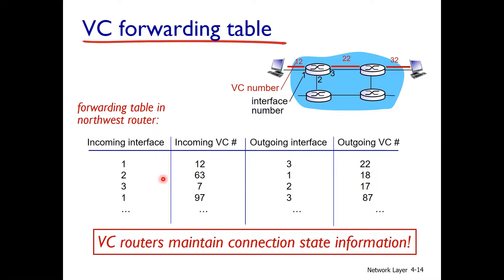There are many VC numbers and many different interfaces, but we are concerned about the first row with incoming VC number 12. When a packet arrives with header VC number 12, we look up the forwarding table and find that the outgoing VC number is 22 and the outgoing interface is 3, so the packet is forwarded out interface 3.